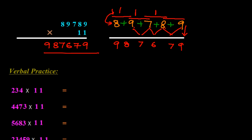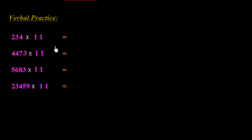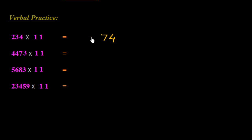Now we do some questions verbally. To multiply 234 by 11: first write down the last digit 4, then 3 plus 4 is 7, then 2 plus 3 is 5, then write down the first digit 2. So the answer is 2574.